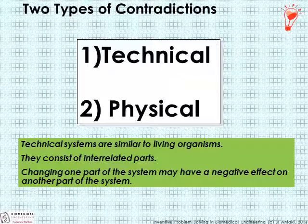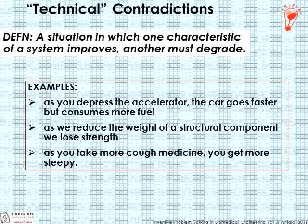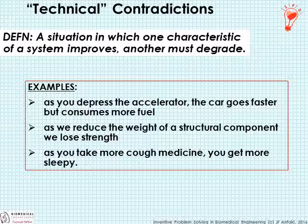Altschuller recognized two major categories of contradictions: technical contradictions and physical contradictions. We'll focus mostly on technical contradictions this week and move on to physical contradictions next week. He says technical systems are similar to living organisms — they consist of interrelated parts, and changing one part may have a negative effect on another. A technical contradiction is defined as a situation in which, as one characteristic of a system improves, another must degrade. For example, as you depress the accelerator, you go faster but consume more fuel; as we reduce the weight of a structural component, we lose strength; as you take more cough medicine, you get more sleepy.